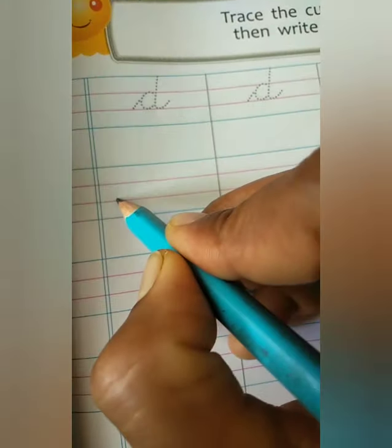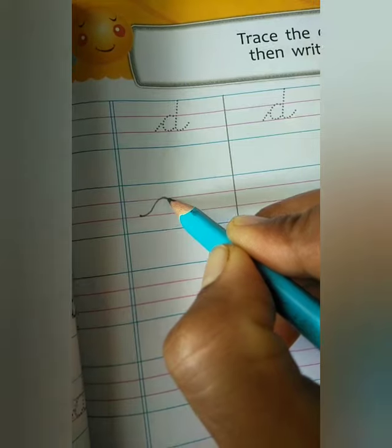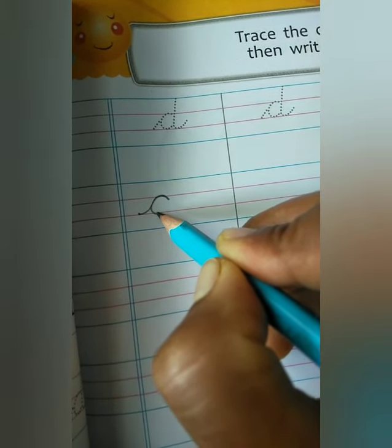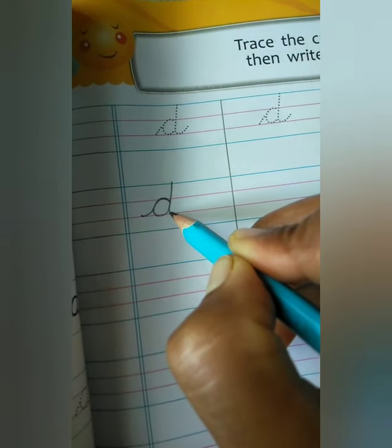Start. Start from red line. Then curve, change to blue line, down side, curve. Up side, touch to blue line, then curve.